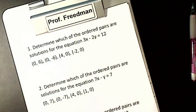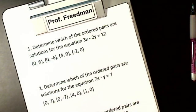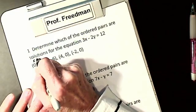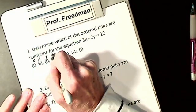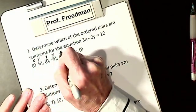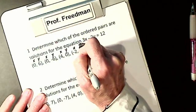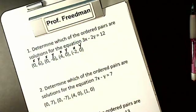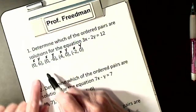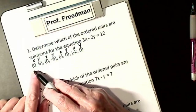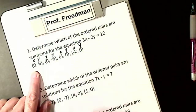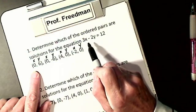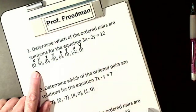Remember, in a coordinate pair or an ordered pair, the first coordinate is x and the second coordinate is y. So the first ordered pair is (0, 6) — if x is 0 and y is 6, is that a solution? To be a solution, if I substitute in, I will get 12 equals 12.